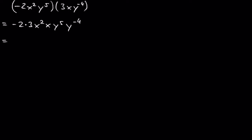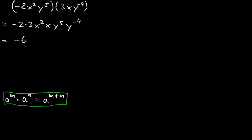Negative 2 times 3 is negative 6. What is x squared times x? This is a good example for the multiplication rule of exponents with the same base. Keep the base, which in our example is x, and add the exponents, which are 2 and 1. Remember, any number is the same as the number raised to the power of 1.